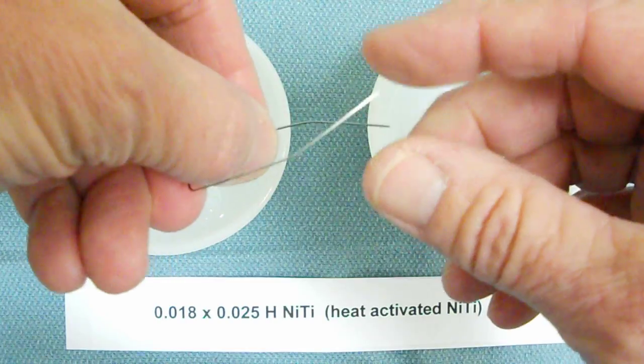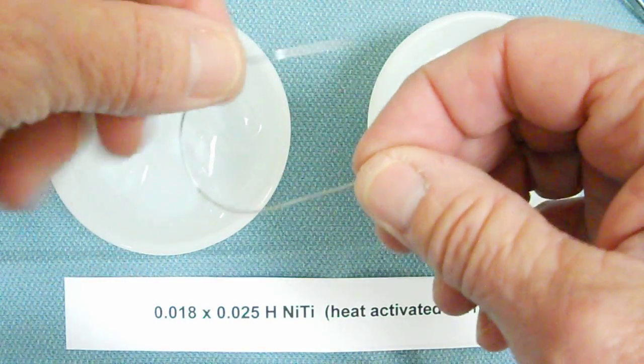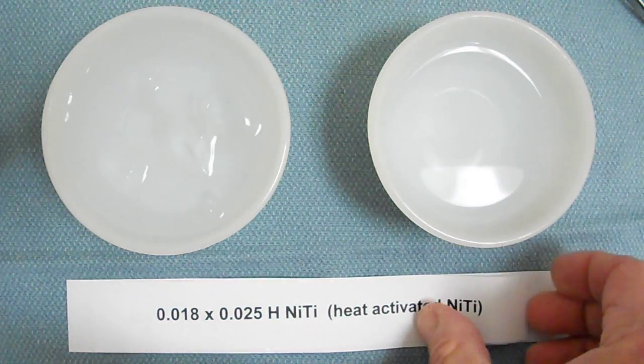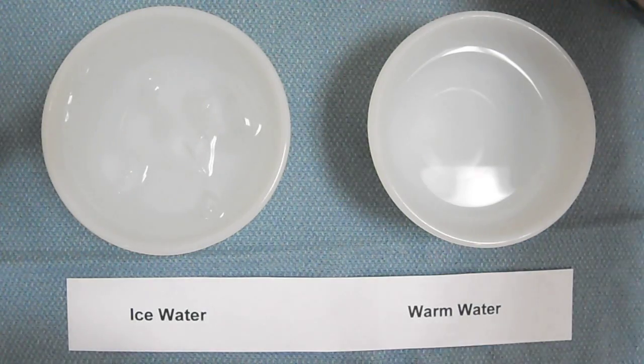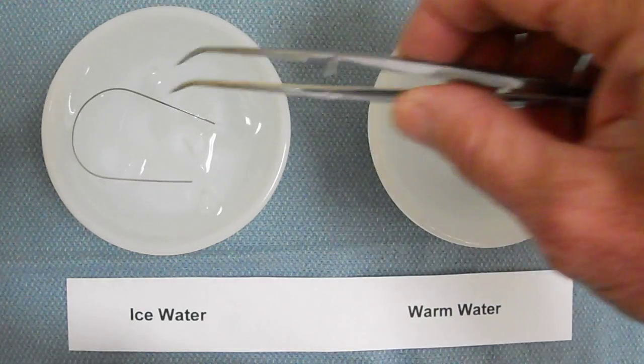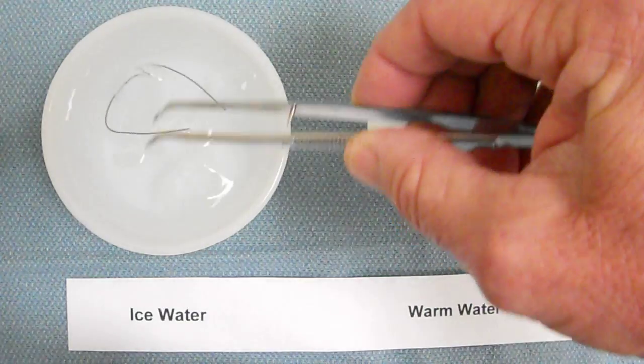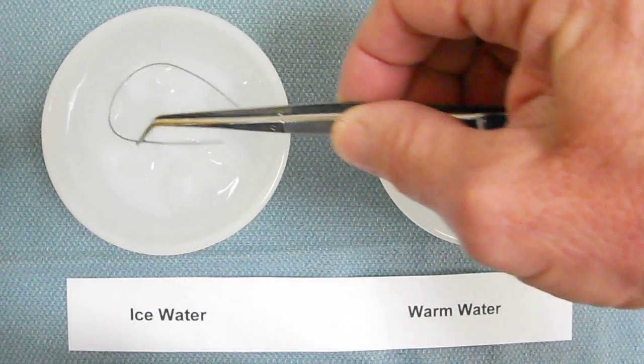The part about the heat activated NiTi: when you chill it, you can see there's ice water here on one side and warm water on another side. When you chill it in ice water like that, it changes phase and turns into a dead soft wire.